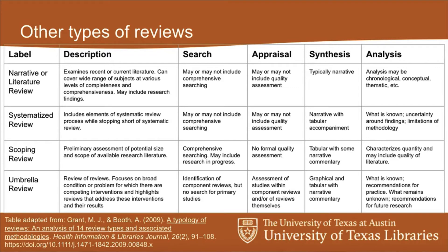I personally work a lot with scoping reviews. A lot of times when researchers come to me interested in a systematic review, they're really more interested in doing a scoping review because this is a little bit broader — it's taking a look at the scope of the research that's out there. That's not to say there won't be a little bit of scoping within a systematic review too. It's just about how much emphasis you're placing on getting an idea of the state of the literature.